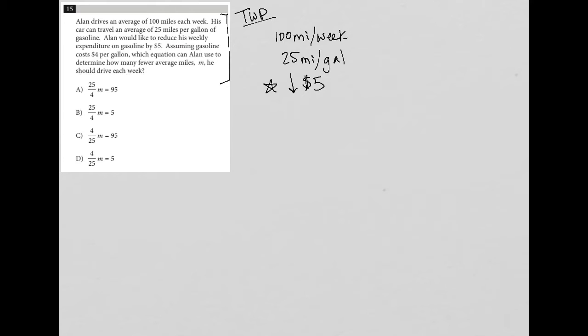Assuming gasoline costs four dollars per gallon. So another statement of fact, four dollars per gallon. Which equation can Alan use to determine how many fewer miles, how many fewer average miles M?